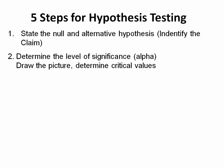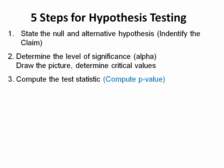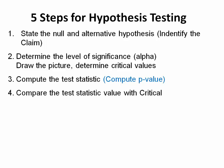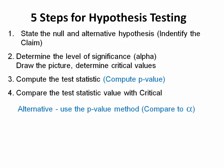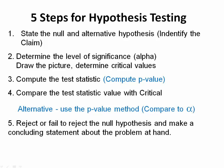We're going to draw the picture and determine the critical values in step three. We're going to compute the test statistic and at the same time compute the p-value. We're going to compare the test statistic value with the critical value in step four, or we're going to use an alternative method and compare the p-value to alpha.